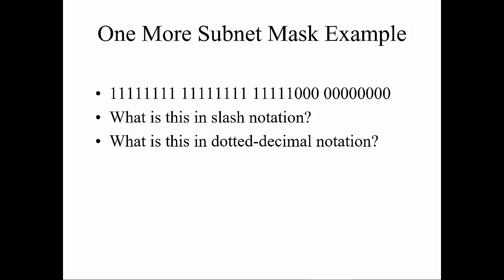Let's look at one more example. Counting the ones: 8 plus 8 is 16, then 17, 18, 19, 20, 21 — so the slash notation would be /21. In dotted decimal form, that's 255.255.248.0, because in the third octet we add 128 plus 64 plus 32 plus 16 plus 8 and do not add the 4, 2, or 1. That gives us 248. With subnetting, it's practice, practice, practice.